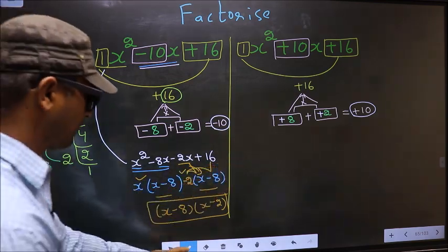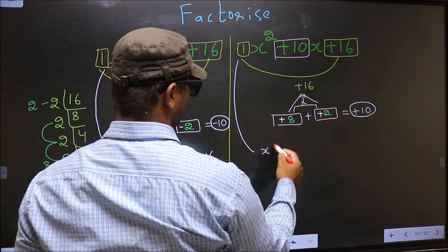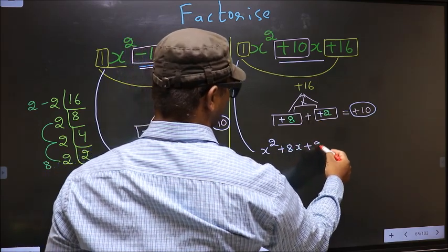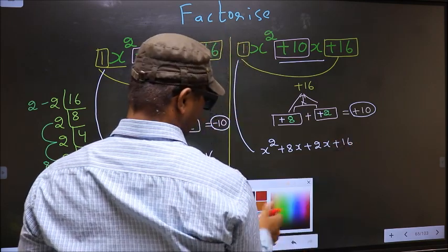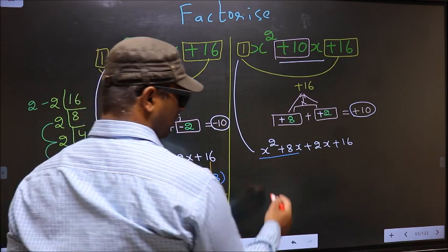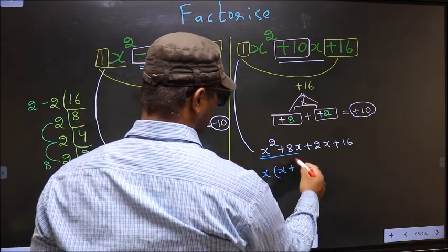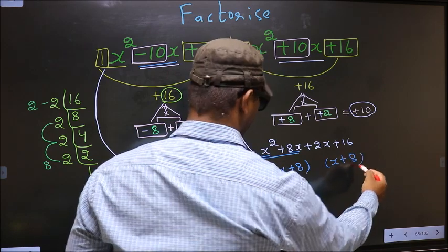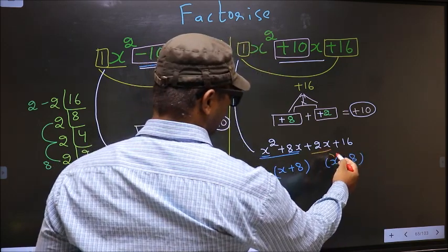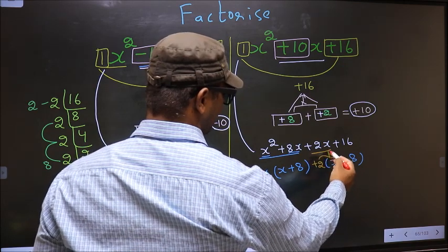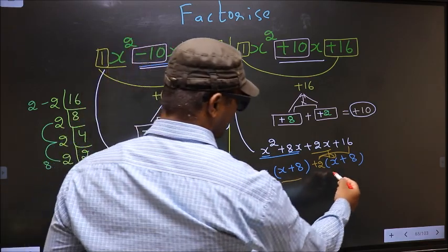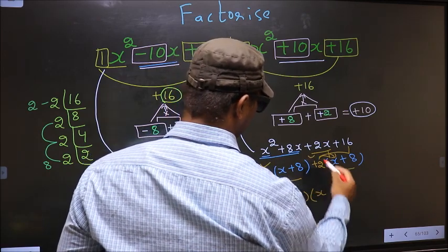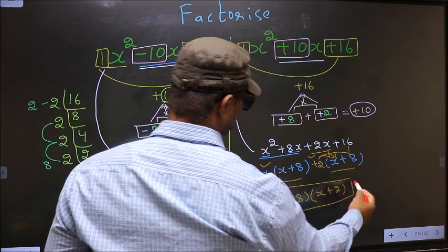Now for the second expression. You change this to x squared. In place of plus 10x, we should write plus 8x plus 2x plus 16. From the first two terms, what can be taken out common? X. So here you get x plus 8. From the last two terms, x has gone inside, so outside you get plus 2, giving plus 2 times x plus 8. Now you take out x plus 8 common, so here you have x and here you have plus 2. So this is the answer: (x plus 8)(x plus 2).